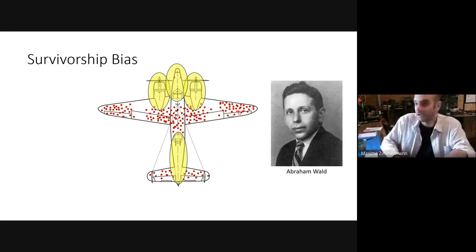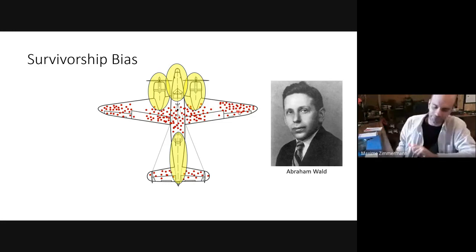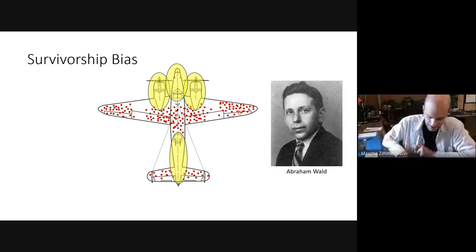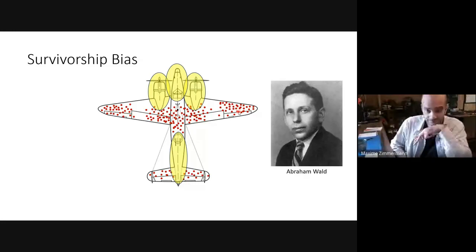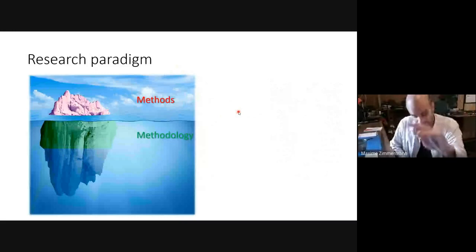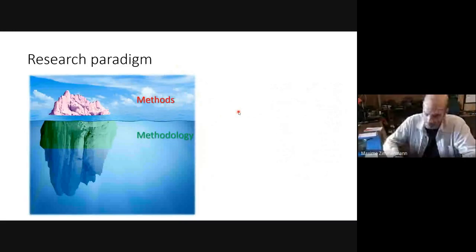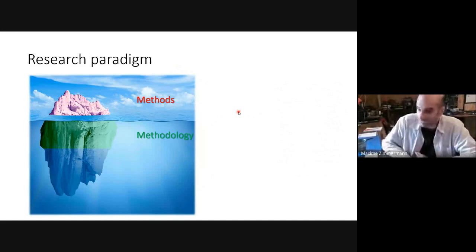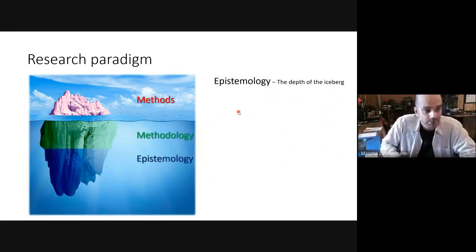I'm not going to spend too much time on that — just a quick example of what I mean when I talk about methodology and trying to systematically find errors in your protocol. There are hundreds of such experimental biases — all very interesting to go through. But for the time being, let's move forward. We have the method, we have the methodology, and you can see there's more to the iceberg — something you cannot see but is always there: what we call epistemology.